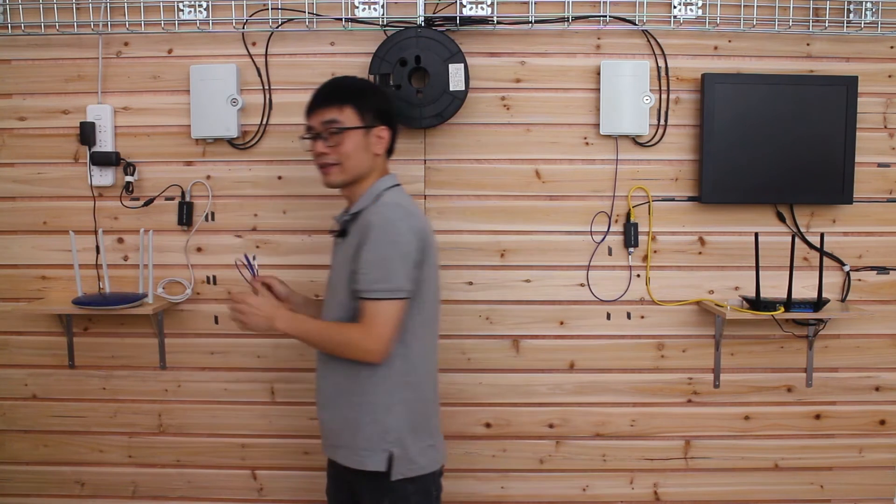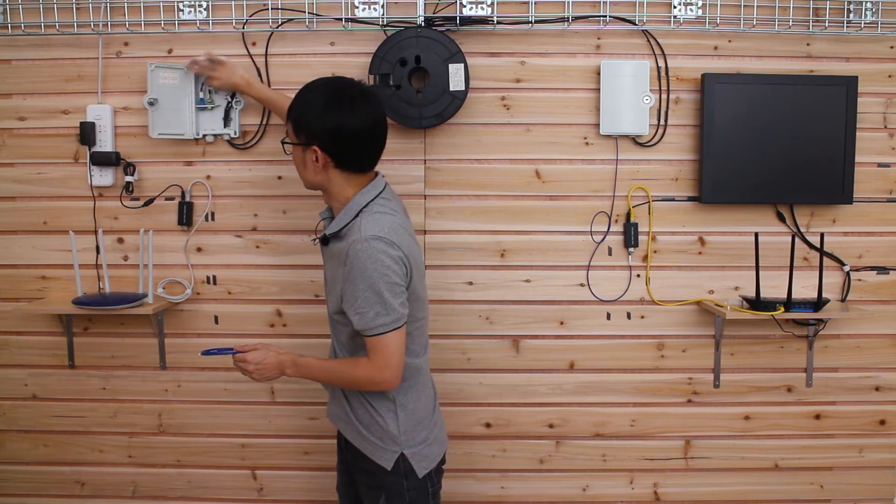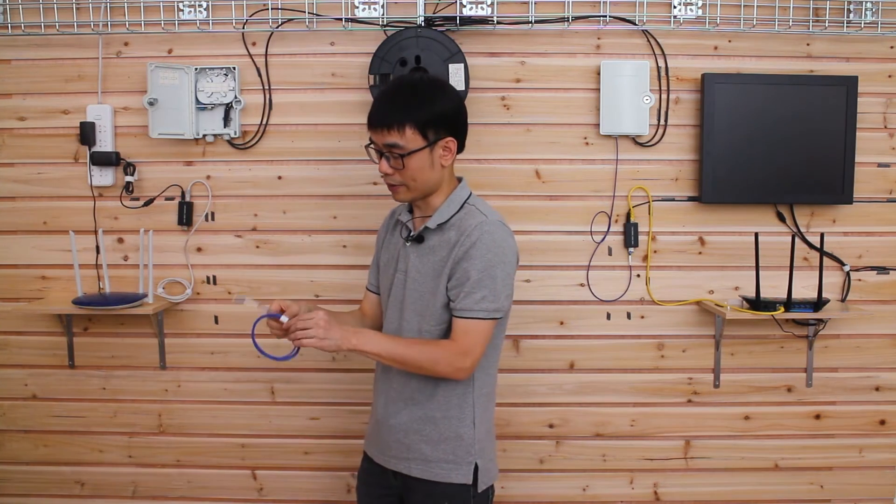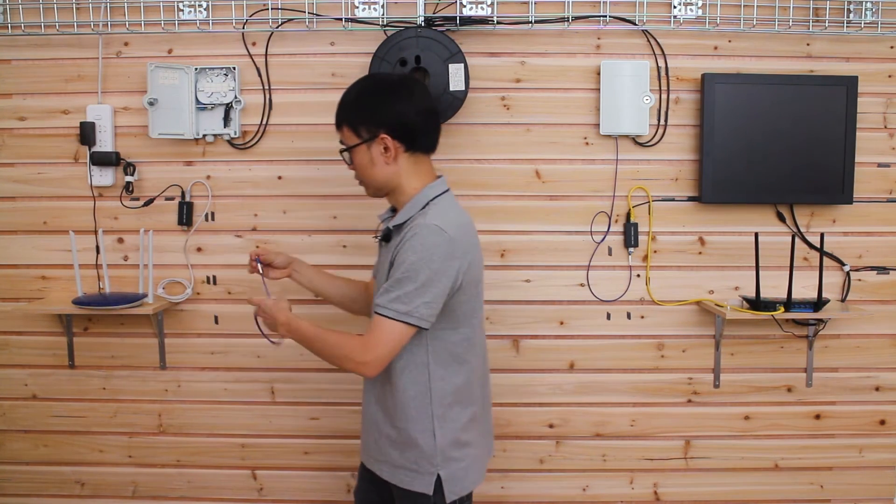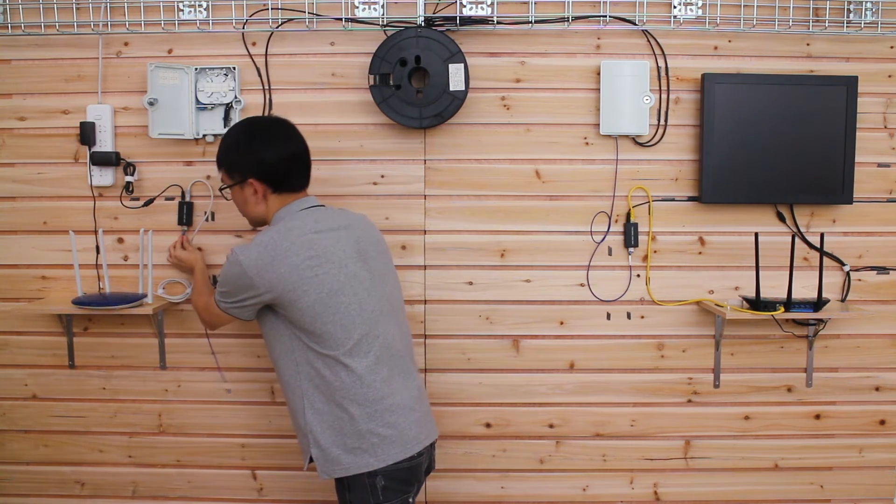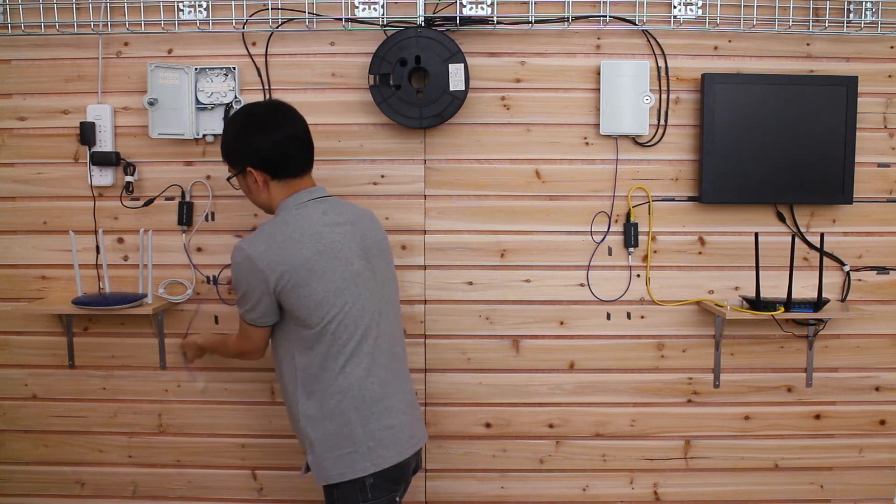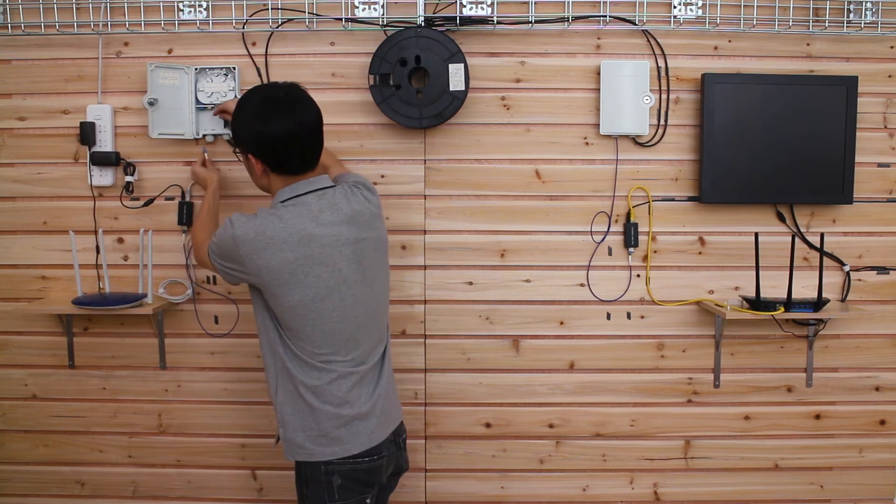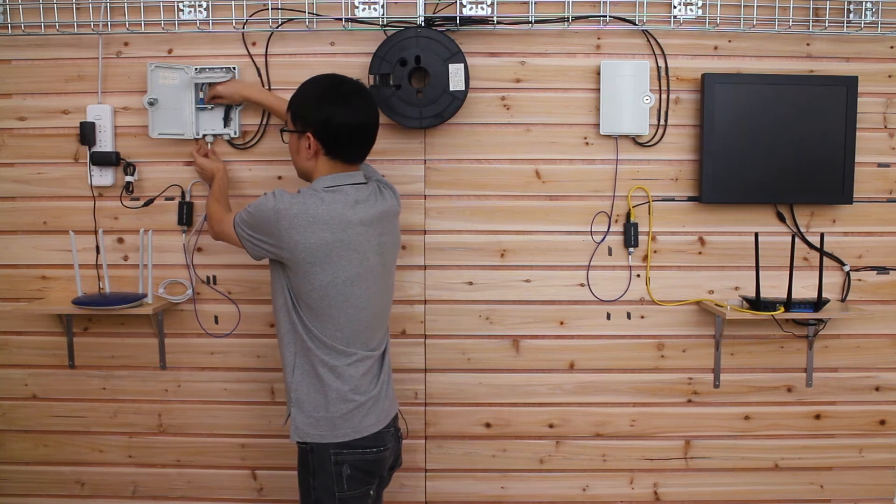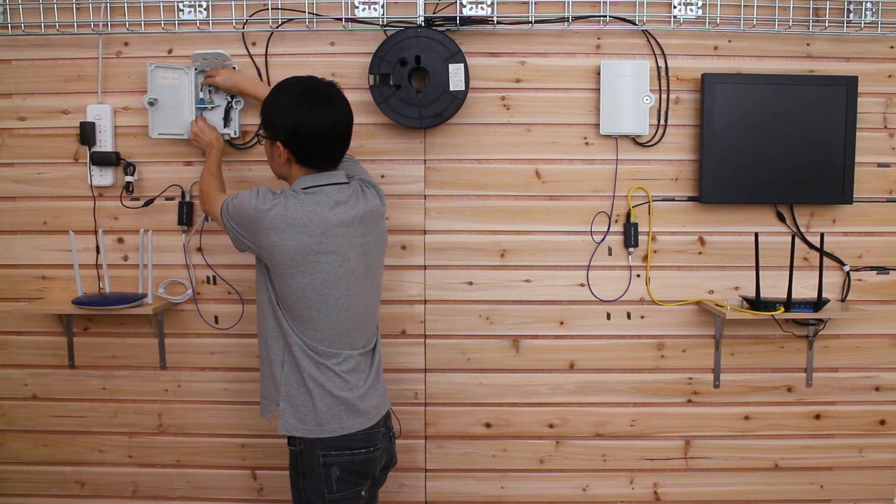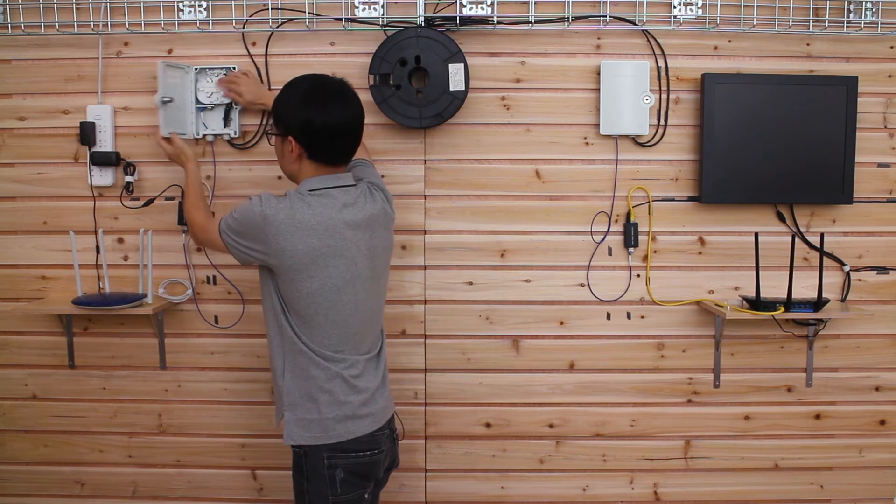Now just the last step. I need to connect the cable A to this media converter, then that will be it. Let me connect to the media converter. Now let's go to the cable manager box and find the A, the first one. There we are.